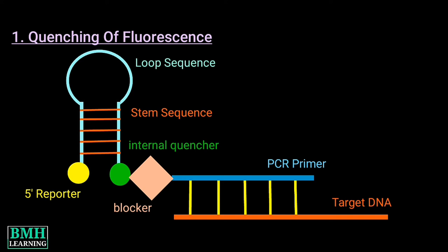These are directly linked to the five prime end of a PCR primer via a hexethylene glycol blocker. The blocker prevents the polymerase from extending the PCR primer.